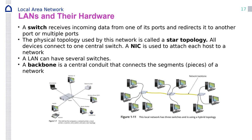A switch receives incoming data from one of its ports and redirects it to another port or multiple ports. The physical topology of the network can be a star — you have one central access point in the middle and all the computers are connected to it, looking like a star. This is called star topology.